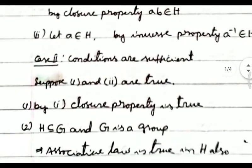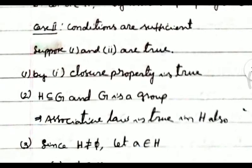Next, case two: conditions are sufficient. Suppose that conditions one and two are true in H. By condition one, closure property is satisfied. Since H is a subset of G and G is a group, associativity is also true in H.